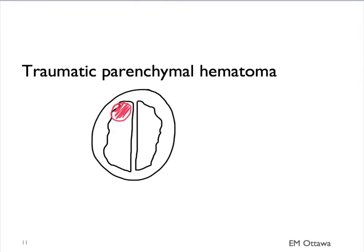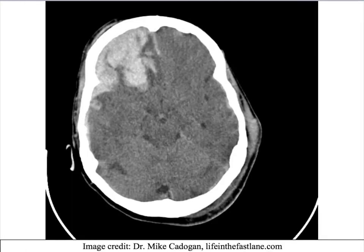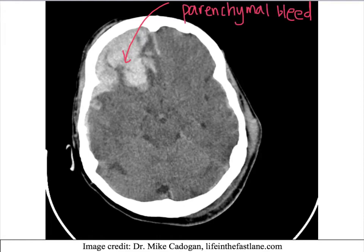Let's move on to parenchymal hematoma. For trauma, the parenchymal hematoma will occur where the trauma is. On a CT scan, it will look like this — that is the parenchymal hemorrhage. Do you see another type of bleed in here as well? This bright white line is bright, so it's likely fresh blood. It lines the inner table of the skull, forming a crescent shape. This is a small subdural hematoma.